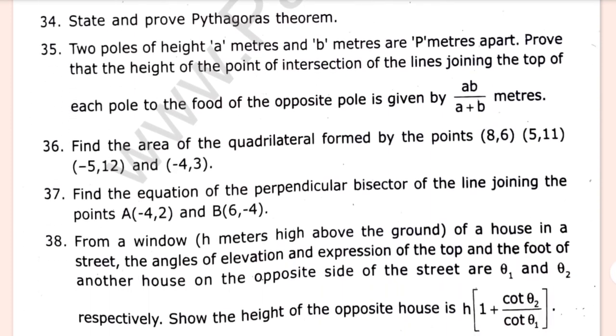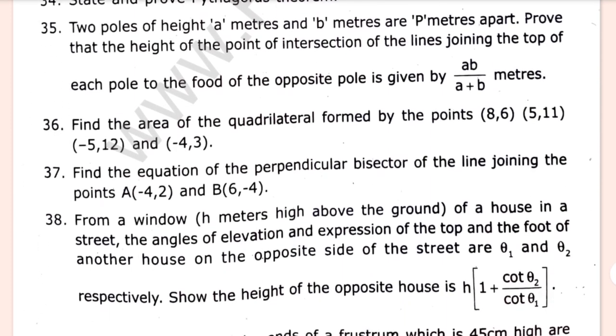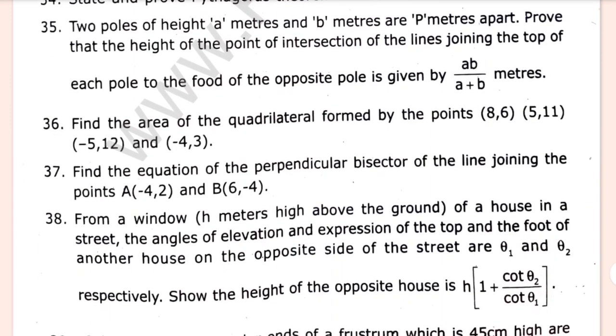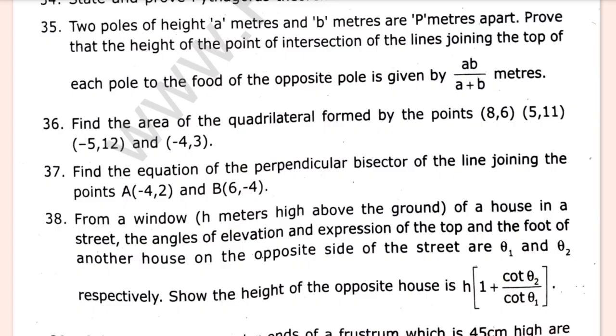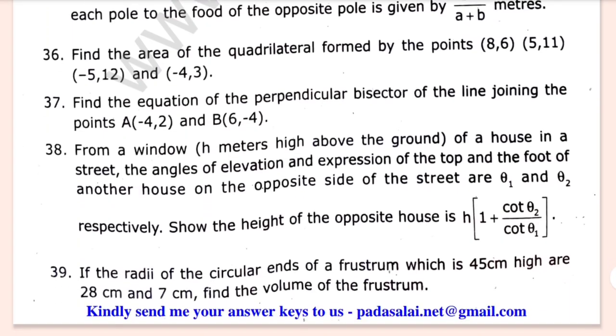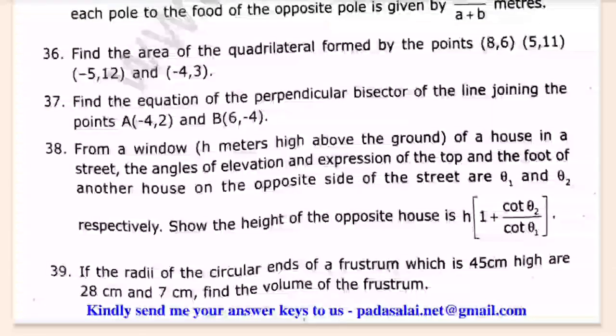Find the area of the quadrilateral formed by the points (8, 6), (5, 11), (minus 5, 12), and (minus 4, 3).